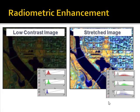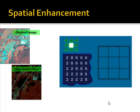Radiometric enhancement techniques are used to improve the display of imagery, and this is often done within the GIS by default. Spatial enhancement involves running a filter over the image — an example of this is an edge detection filter.